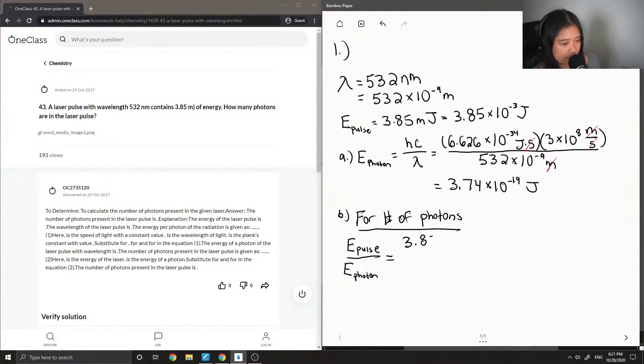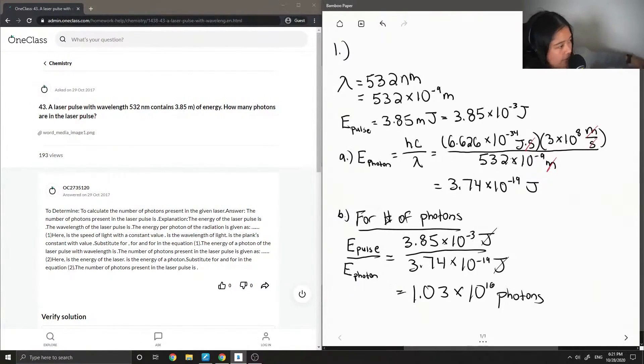It's 3.85 times 10 to the negative 3 joules divided by 3.74 times 10 to the negative 19 joules. The joules cancel out, and for the number of photons we get 1.03 times 10 to the 16 photons.